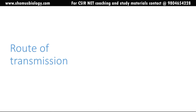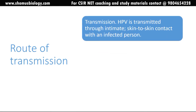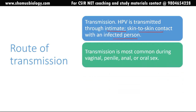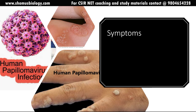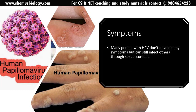The route of transmission: HPV is transmitted through intimate skin-to-skin contact with an infected person, making it essentially a sexually transmitted disease and the most abundant infection possible via sexual transmission. Transmission is most common during vaginal, penile, anal, or oral sex. Studies of newly acquired HPV infection show that infection typically occurs soon after first sexual activity with an infected person.